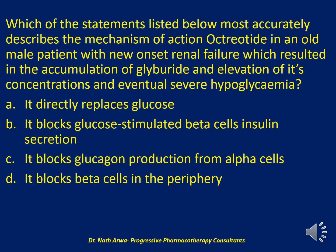The next question reads: which of the statements listed below most accurately describes the mechanism of action of octreotide in an older male patient with new onset renal failure, which resulted in accumulation of glyburide sulfonylurea and elevation of its concentration and eventual severe hypoglycemia? Is it: it directly replaces glucose; it blocks glucose-stimulated beta cell insulin secretion; it blocks glucagon production from alpha cells; or it blocks beta cells in the periphery? I'll give you 10 seconds.